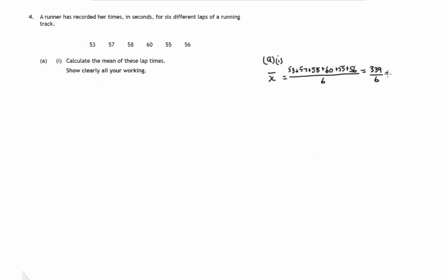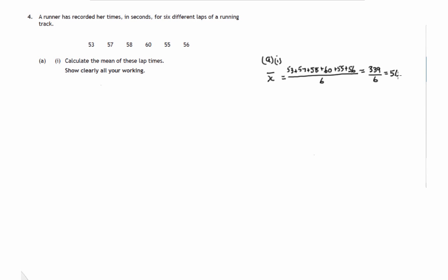Divided by 6, 6 into 33 is 5, 6 into the 39 goes 6 with 3 left over, that's 0.5. So 56.5. As I said, you could easily do this on your calculator, but there's 56.5.